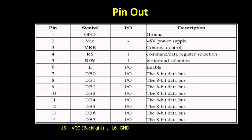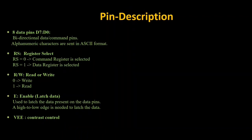We have seen the pin diagrams - ground, contrast control, and all those things. The RS pin selects your command word or data word, and the R/W pin is for read or write. The enable pin sends your data from the data pins to the corresponding registers. There are eight bi-directional data pins. If RS gets the value zero it selects the command register, and if RS is one it selects the data register.